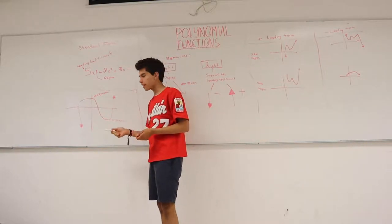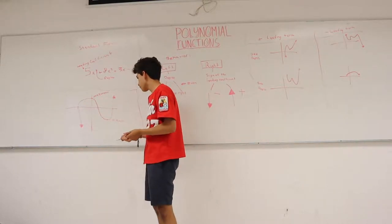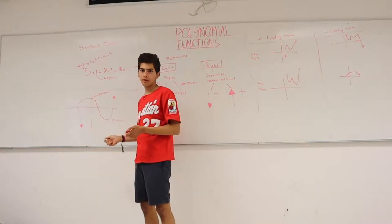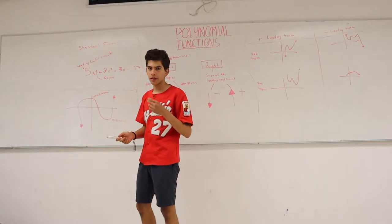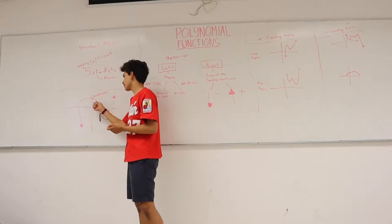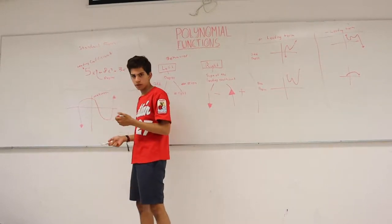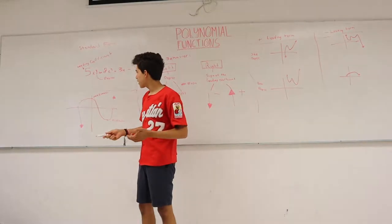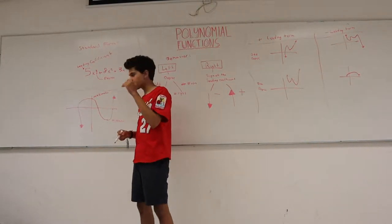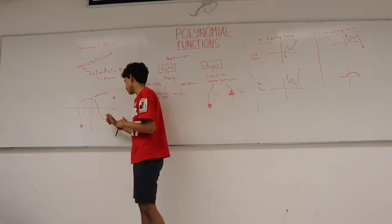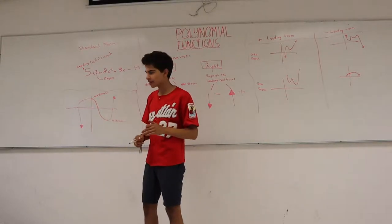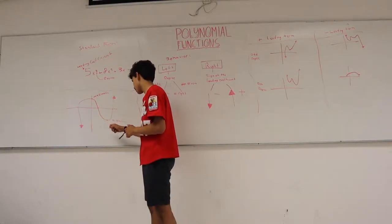The local maximum and local minimum are the highest and lowest points of the polynomial function. The local maximum is the highest point that occurs in a curve, and the local minimum is the lowest point that occurs in a curve.